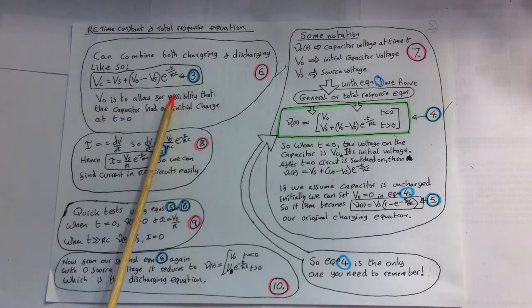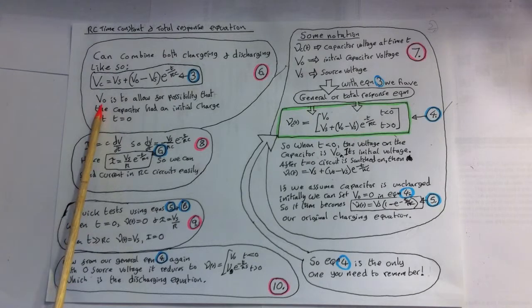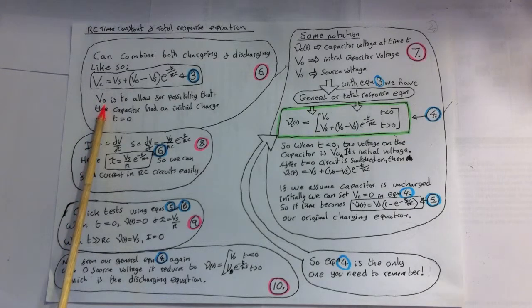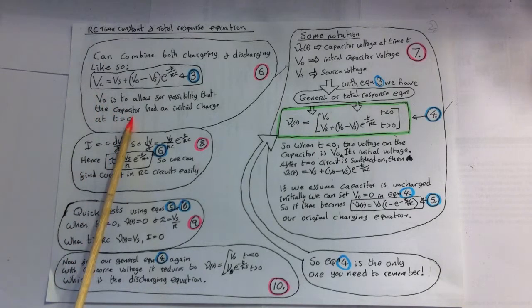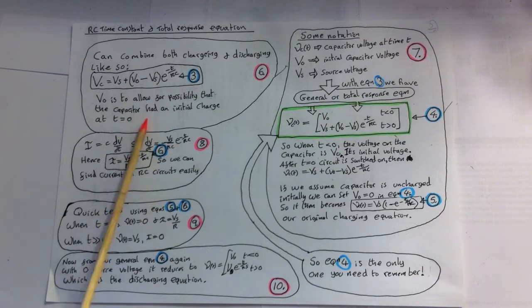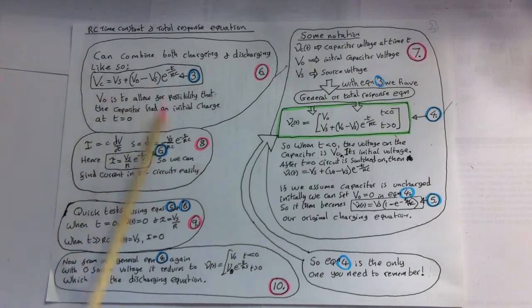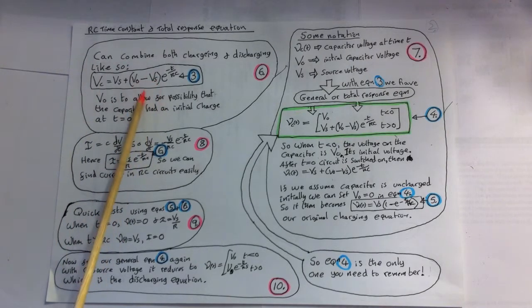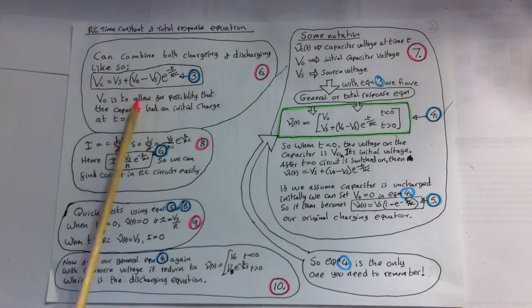So V0 here is to allow for the possibility that the capacitor already had a voltage across it at T equals 0. This equation is the only one you need to know for RC circuits, as it incorporates both the charging step and the discharging step, the equations 1 and 2 in the previous sheet. This incorporates both of them, and let me show you how that works.